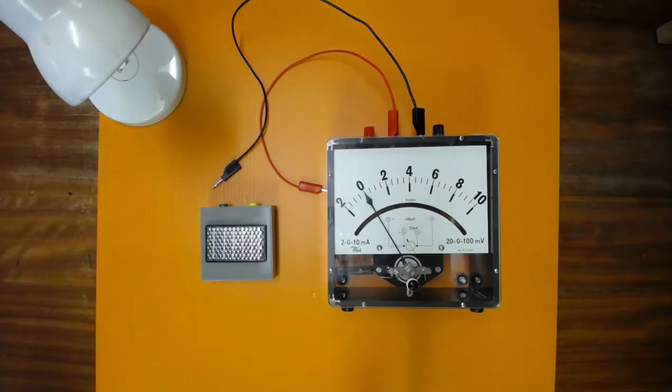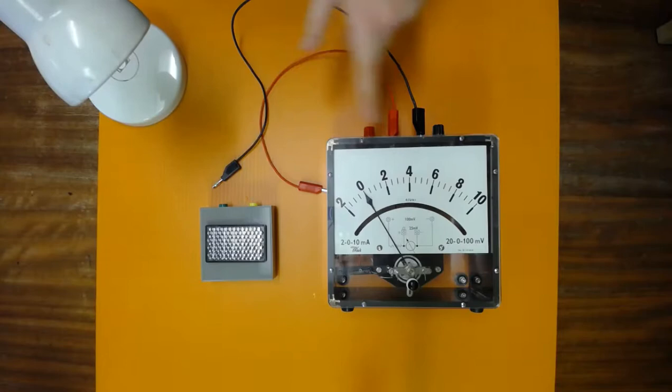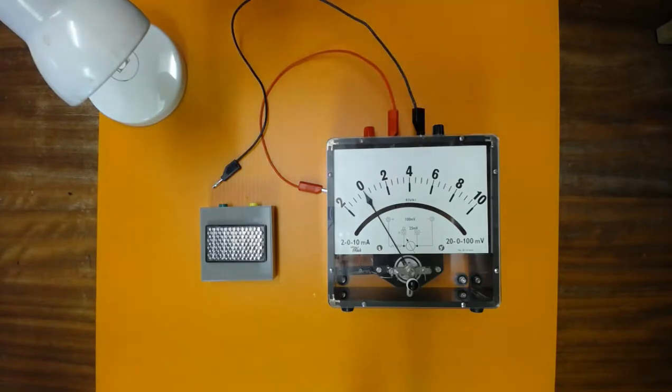The next input transducer is the solar cell. I'm going to connect the solar cell to the voltmeter and then shine the lamp onto the solar cell to see what happens.